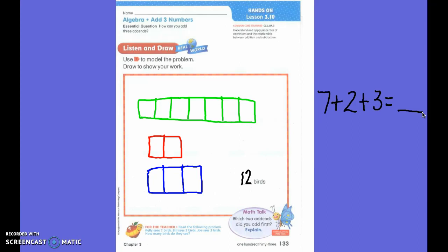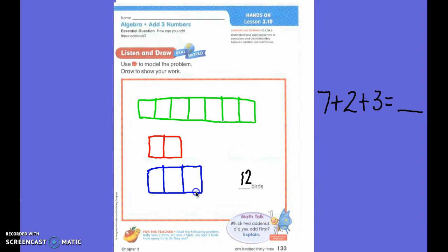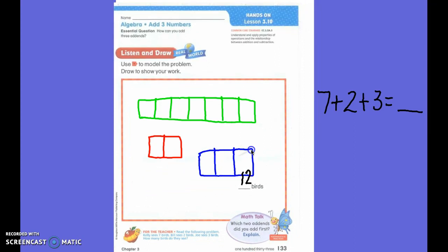7 and 3. Okay, why are you choosing to put this 7 and the 3 together? Because it kind of makes it a bigger number. Okay, it does make it a bigger number. Raise your hand if you know what 7 plus 3 equals. 10. Very good.